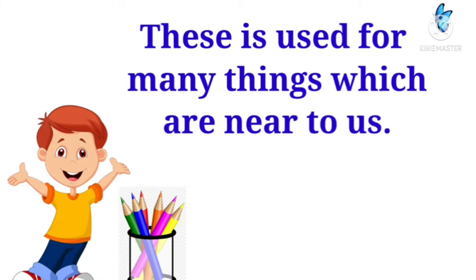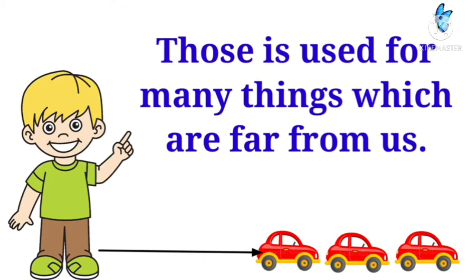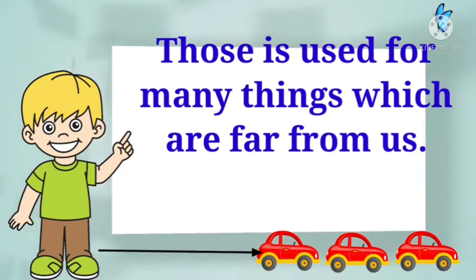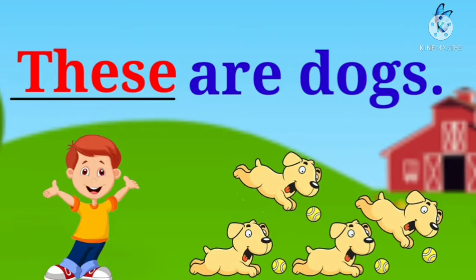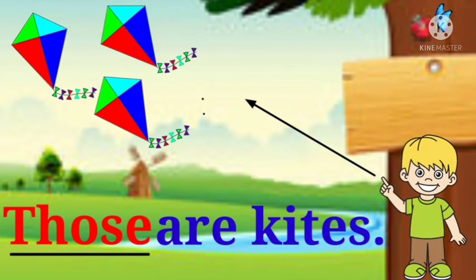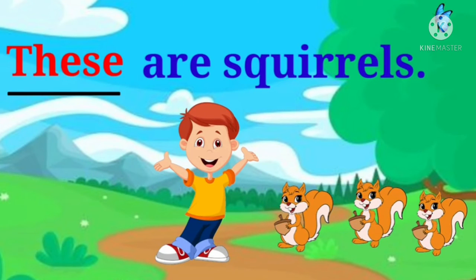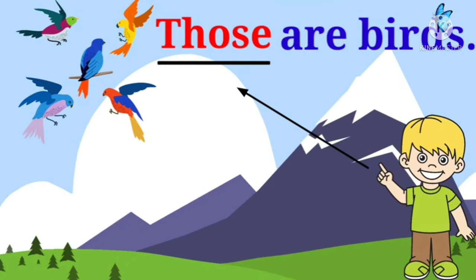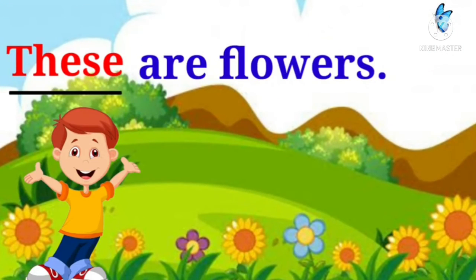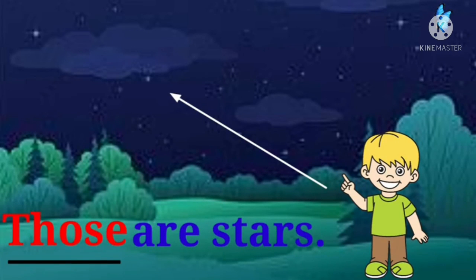'These' is used for many things which are near to us, and 'those' is used for many things which are far from us. Let's learn with examples. These are squirrels. Those are kites. These are squirrels. Those are birds. These are flowers. Those are stars.